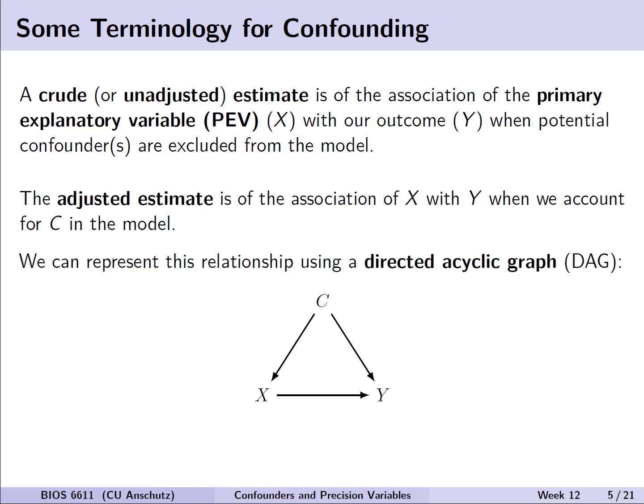In the DAG figure, we have the estimate of x going to y, indicating some relationship or association that we think might be there for x affecting the outcome. For our confounder c, we think there is also some information coming from the confounder that affects both the primary explanatory variable of interest and our outcome. The directions of the arrows show the relationship and directionality that we expect or hypothesize is occurring.